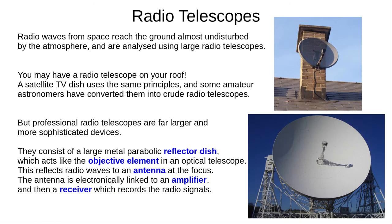Finally today, we'll talk about how radio telescopes work. Radio waves from space reach the ground almost undisturbed by our atmosphere, and are detected using large metal radio telescopes. If you have satellite TV, you have a radio telescope on your roof. Satellite TV dishes use the same technology, and some amateur astronomers have actually converted their satellite dishes into functioning radio telescopes.